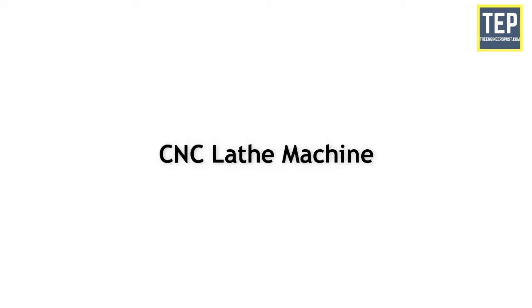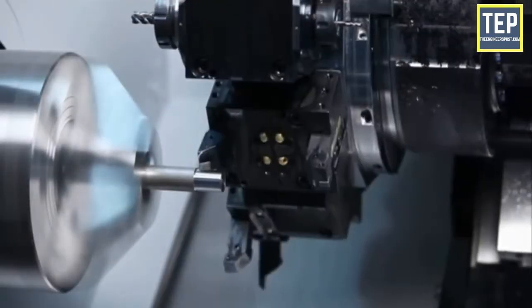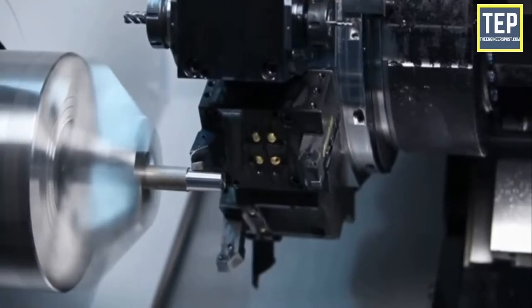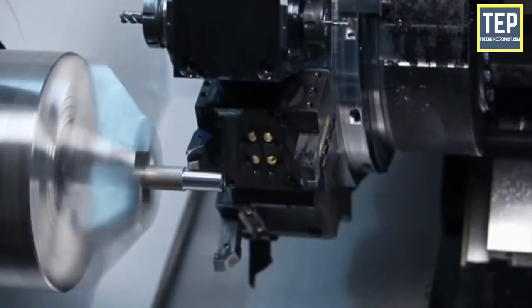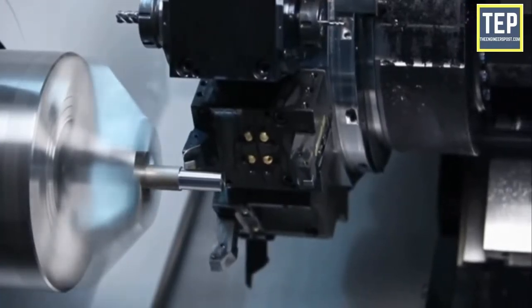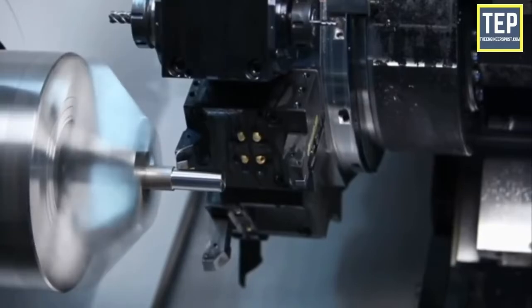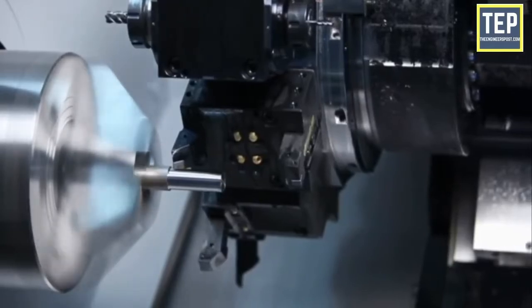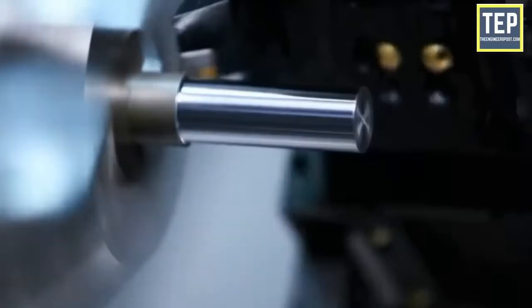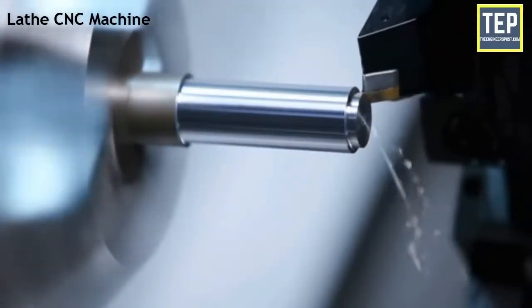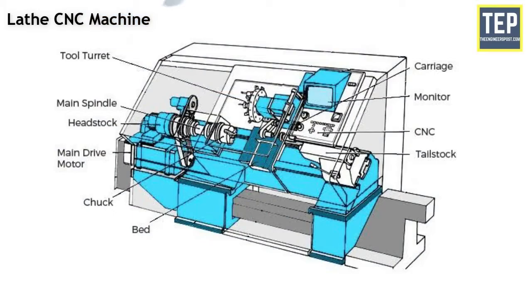CNC lathe machines are defined by their capability to turn materials during operation. They have fewer axes than CNC milling machines, making them shorter and more compact. This machine consists of a lathe at the center that manages and transfers material programmatically via the computer.